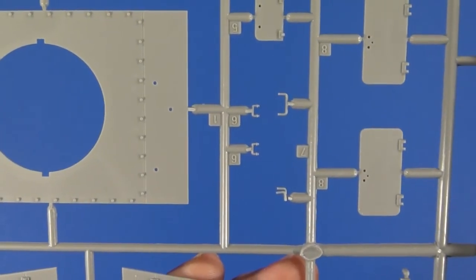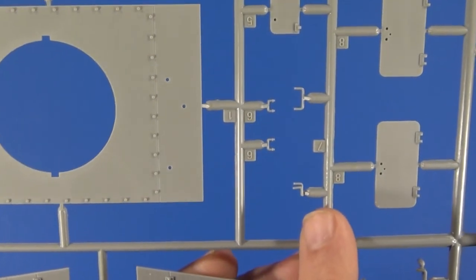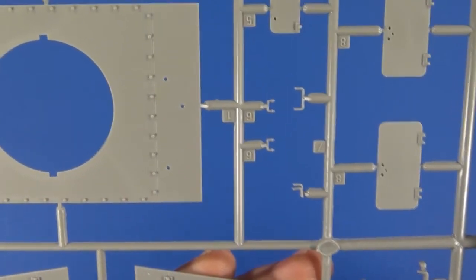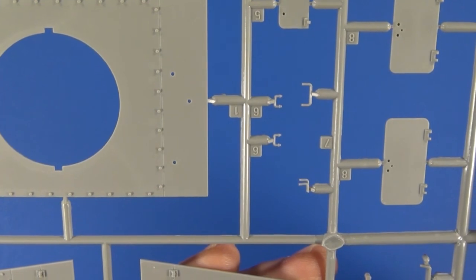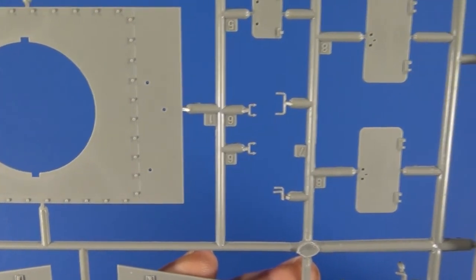This kit did have three broken parts. This is one of them right here - one of the grab handles is folded in half, so I'll probably have to make a new one, probably out of brass wire for that.